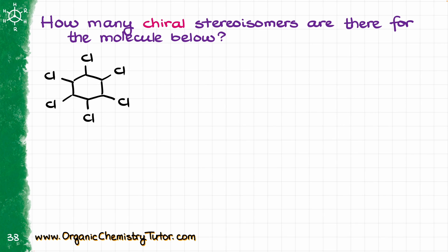Here is the molecule 1,2,3,4,5,6-hexachlorocyclohexane. And the question that I have for you is: how many chiral stereoisomers do we have for this molecule? Is it 0, or maybe 2, 4, maybe 12? How would you approach a question like that?